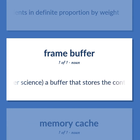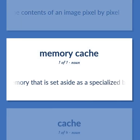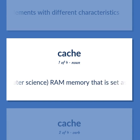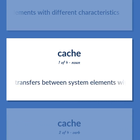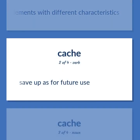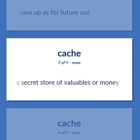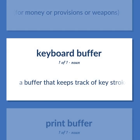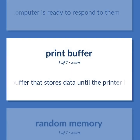Computer Science: a buffer that stores the contents of an image pixel by pixel. RAM memory that is set aside as a specialized buffer storage that is continually updated, used to optimize data transfers between system elements with different characteristics. Save up as for future use. A secret store of valuables or money. A hidden storage space for money, provisions, or weapons. A buffer that keeps track of keystrokes until the computer is ready to respond to them. A buffer that stores data until the printer is ready.